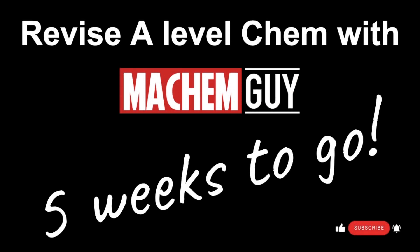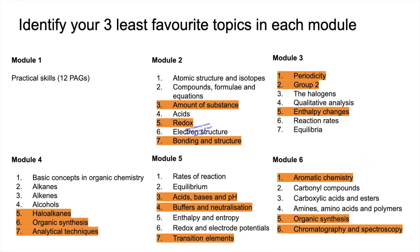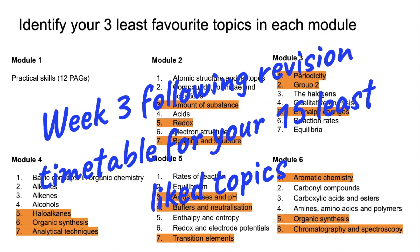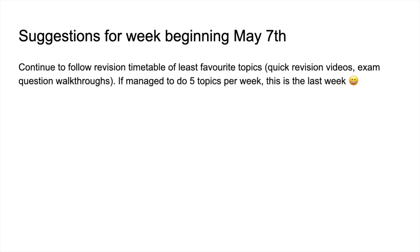Hi everyone, another week's gone, so I'm back with my suggestions for your A-level chemistry revision. With five weeks to go now until that first chemistry exam on June the 12th, and if you've been following the programme, you'll know this is week three of following the revision timetable for your 15 least liked topics. So that's going to form the bulk of the revision for this week — my suggestions are to continue with that revision timetable.